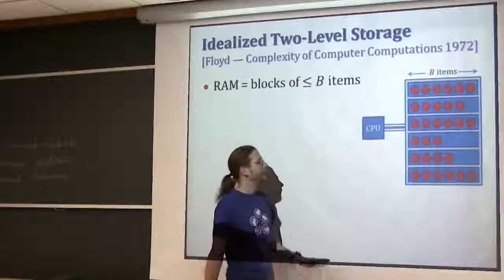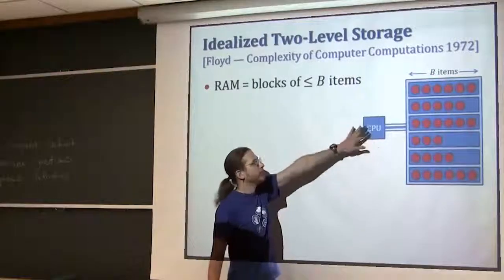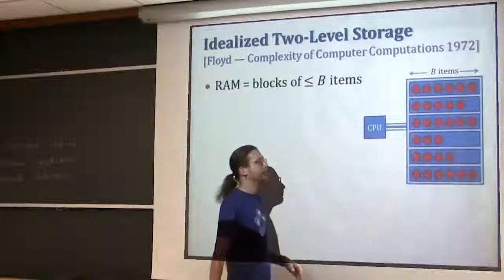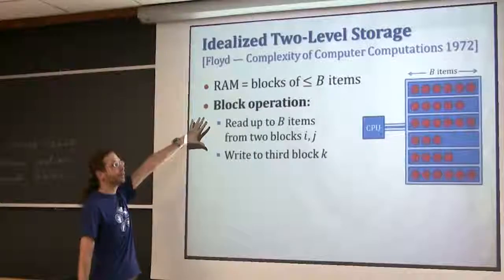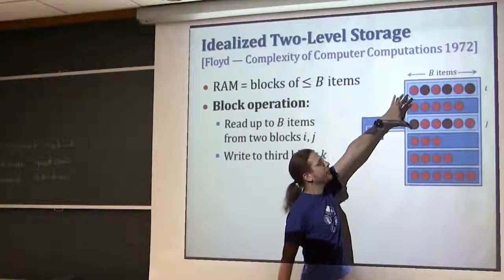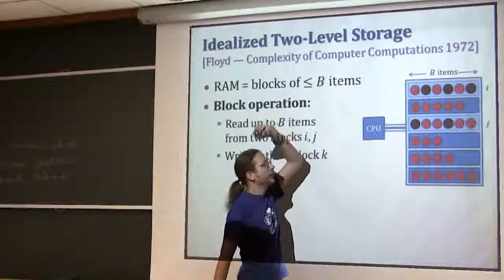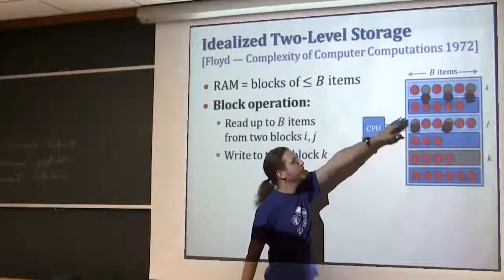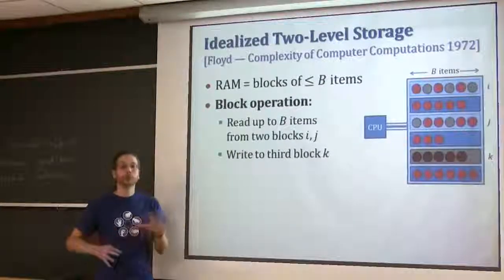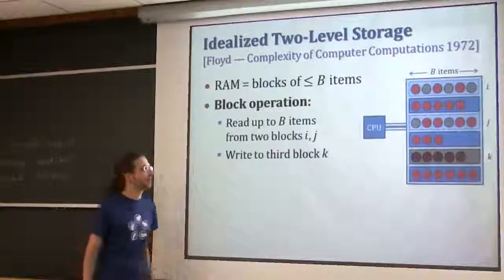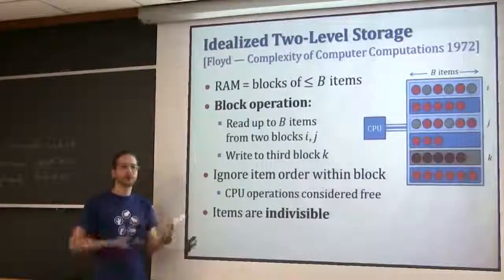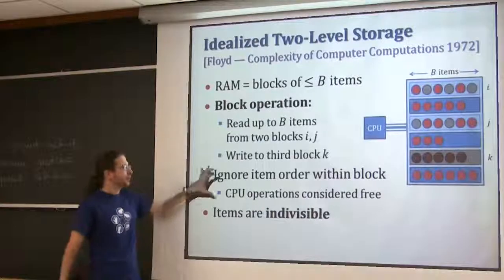Here's the model they introduced - a very simple model. You have your CPU which can do local computation, and then you have your memory which is very big, divided into blocks of size B. Each block can have up to B items. What you're allowed to do in one block operation is read two of the blocks - you can read all the items in the block, pick some subset of those items, and then store them somewhere else, overwriting that block. There's no computation in this model because he was just interested in how you can permute items. You read two blocks, take up to B items out of them, and stick them in another block.